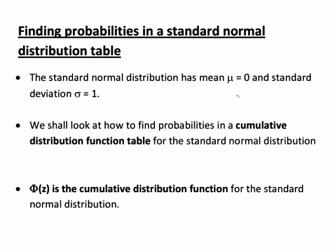And we're going to look in this recording at how to find probabilities in a cumulative distribution function table, as that is a common way for normal distribution tables to be presented, although be aware that they may also sometimes be presented in other forms. In a cumulative distribution function table, phi is then the cumulative distribution function for the standard normal distribution.